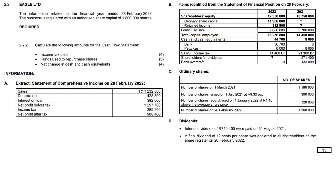Let's now take a look at aspects from the cash flow statement. This question features a business called Eagle Limited, and the requirements focus on 2.2.2. We're going to do the tax paid note, how much money was used to repurchase shares, and then the net change in cash and cash equivalents. First up: the income tax paid for the year.